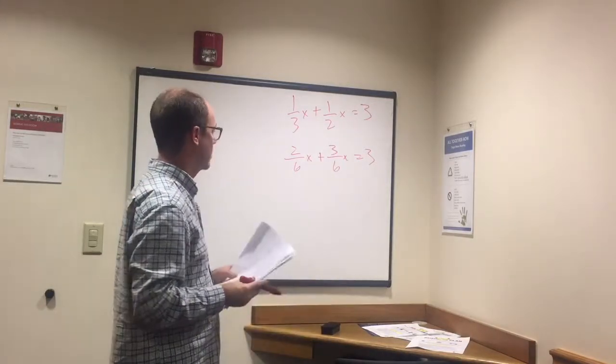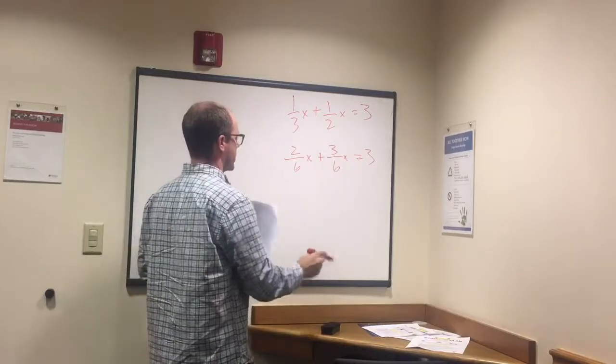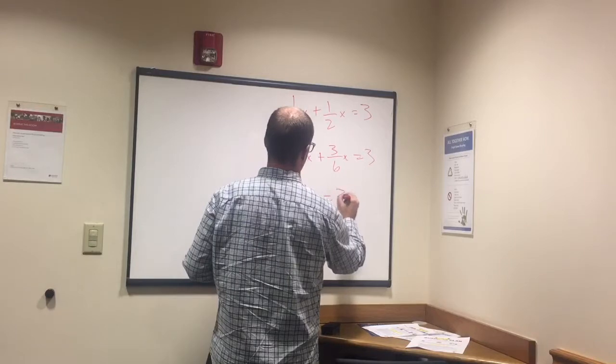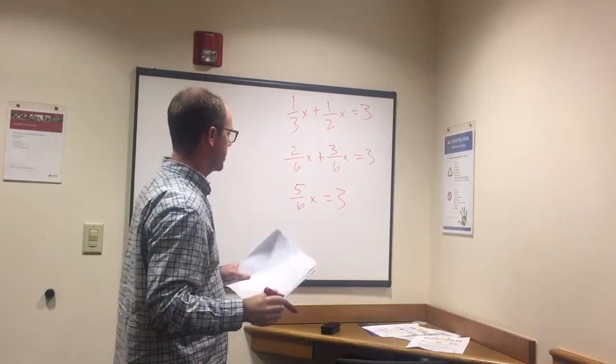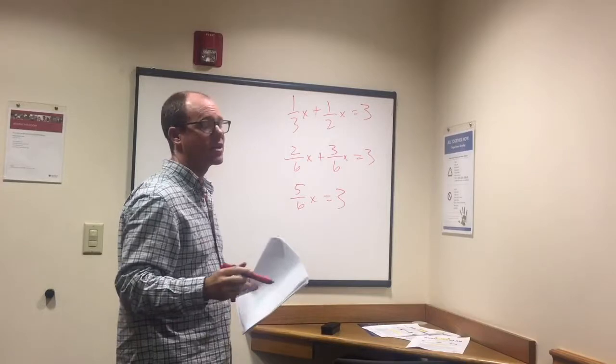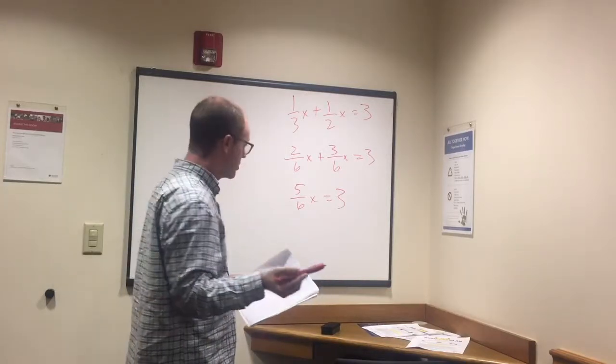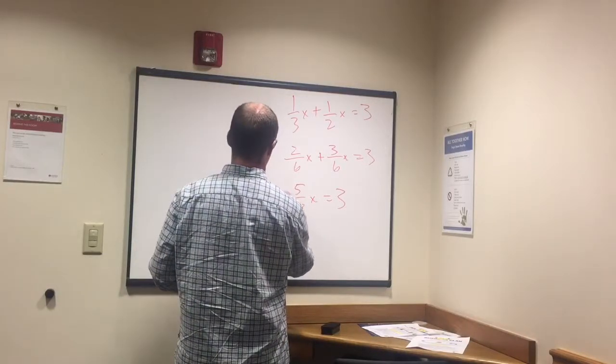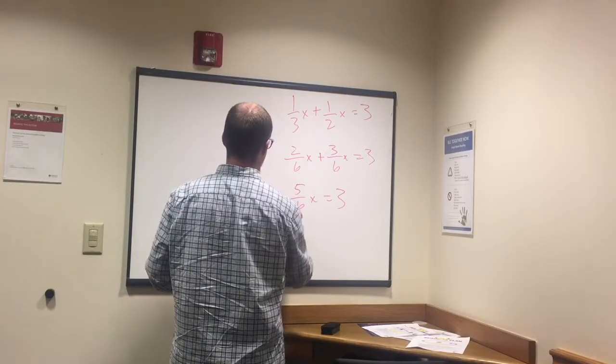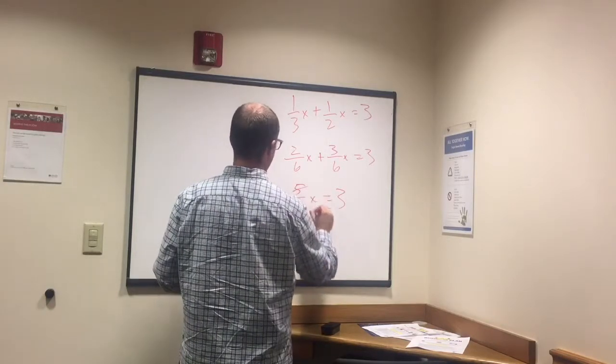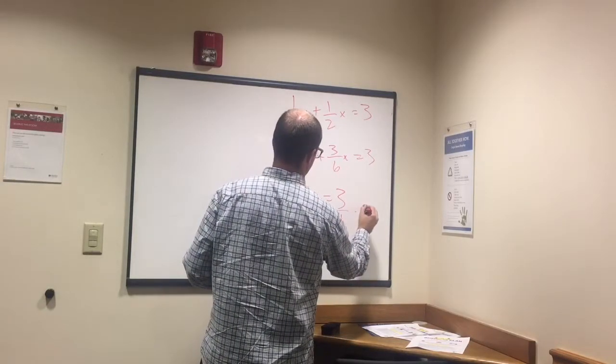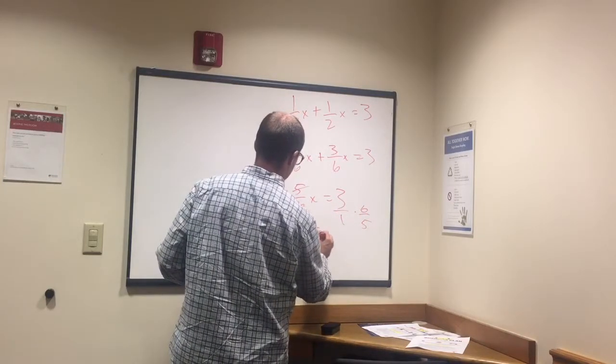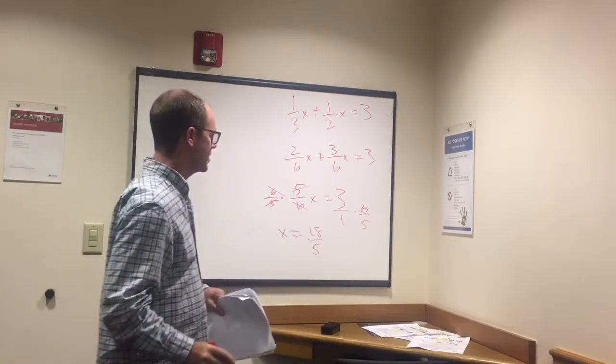Now we can add these two together. So 2 sixths plus 3 sixths equals 5 sixths x equals 3. And now we need to get rid of this 5 sixths, so I need to multiply it by what's called the inverse. The inverse of 5 sixths is 6 over 5. So when I multiply that by 6 out of 5, that's going to cancel everything out and then we just have x. And remember to do it to the other side.